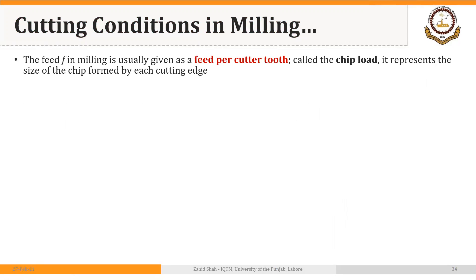The feed in milling is usually given as feed per cutter tooth, which is different from turning and drilling. In those cases it was feed per revolution — inches or millimeters per revolution — but in milling it is inches or millimeters per cutter tooth.